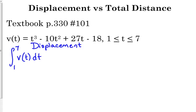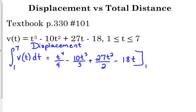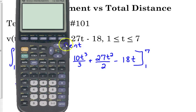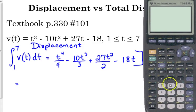Total distance is going to take a little bit more work. But displacement is the easy part. So we're going to anti-differentiate our velocity function. So t to the 4th over 4 minus 10t cubed over 3 plus 27t squared over 2 minus 18t. We're going to evaluate that from 1 to 7. These are kind of big numbers. So I seriously doubt they will give you 7 to the 4th, divided by 4 on the calculator inactive part of your test. So I'm okay with you using the calculator on this.